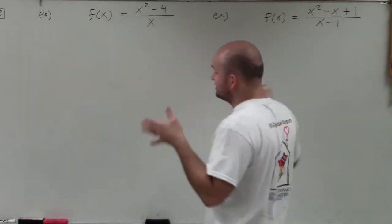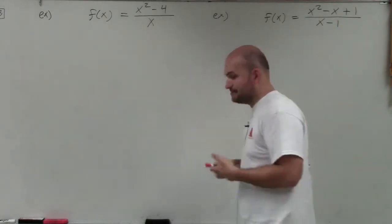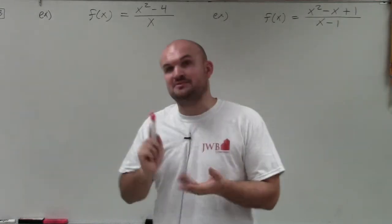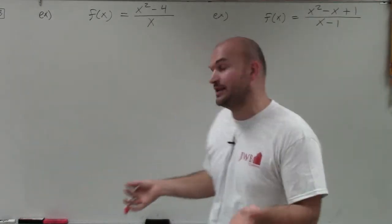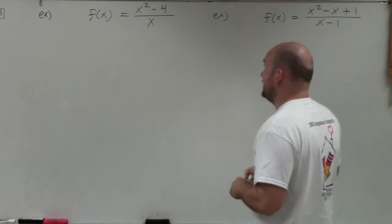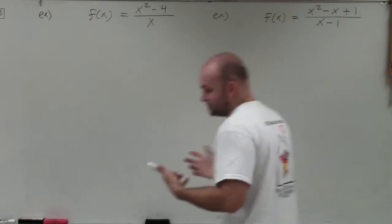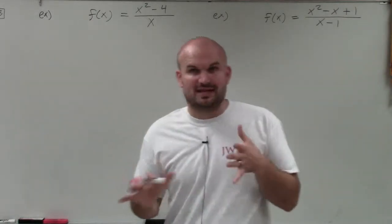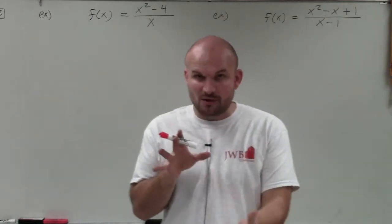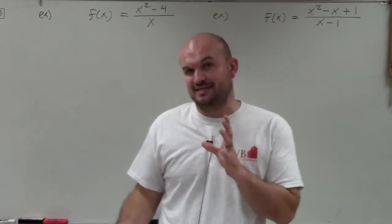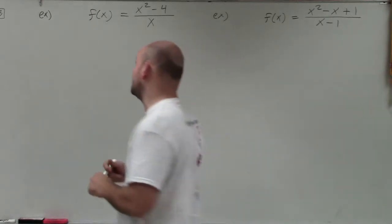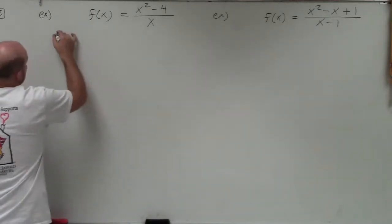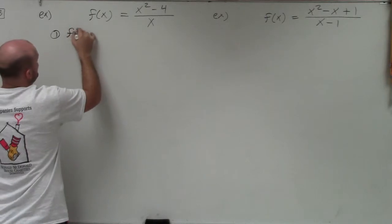We're going to look for the same symmetry, asymptotes, intercepts, and so forth to go ahead and graph. So let's go through the simple steps. But once we get to the horizontal asymptote, we'll see how we transcend into a slant oblique asymptote. First, we need to check for symmetry.